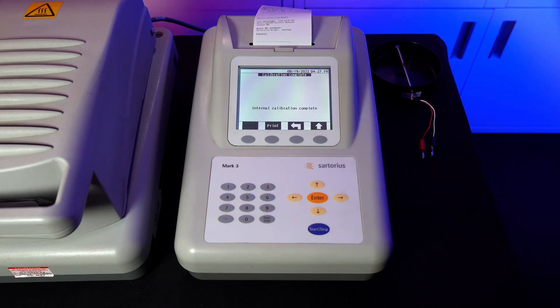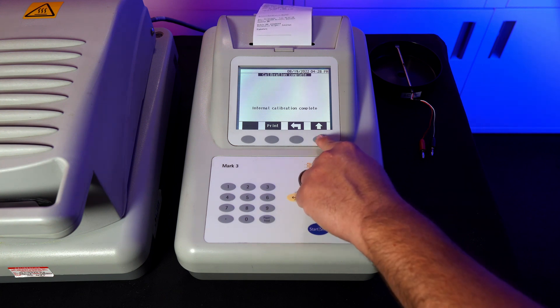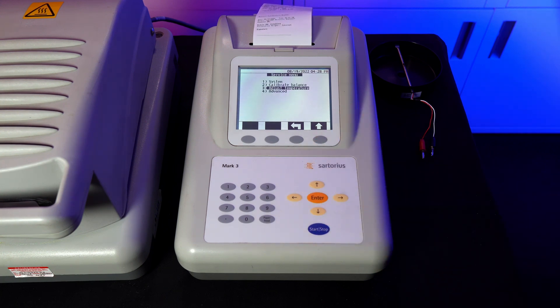You can now hit the print key to print out a date and time of calibration. Let's go back to the previous screen by hitting the up arrow key.